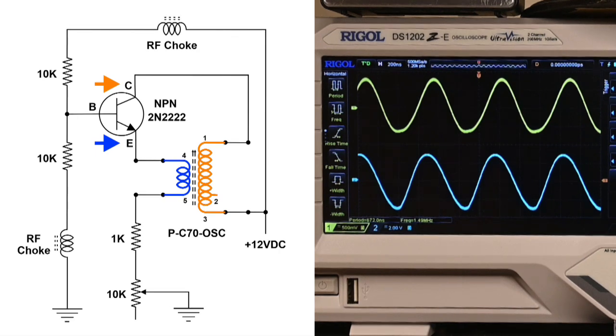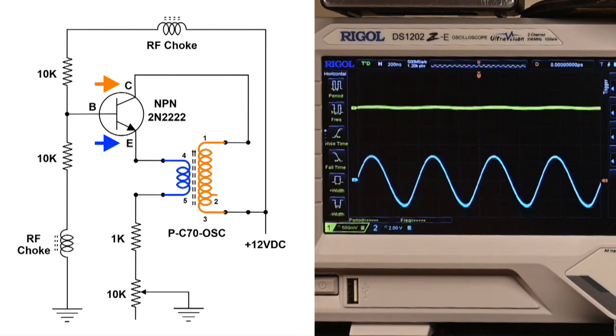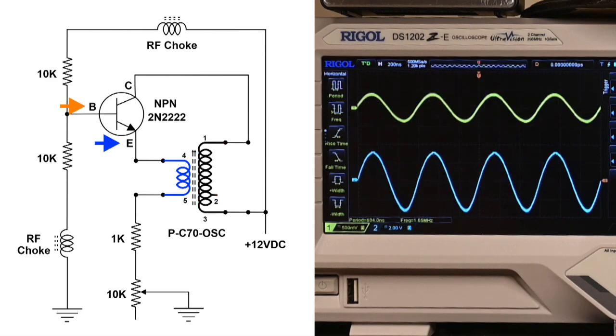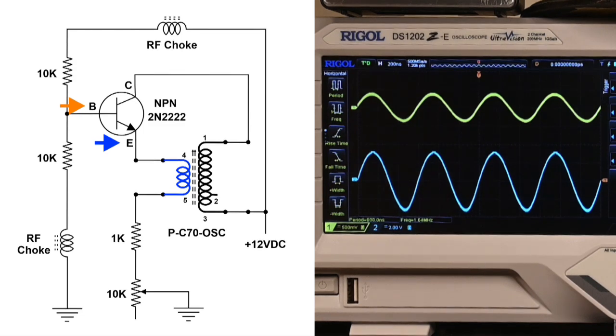Well, let's take a look at the, I'll take the lead off of the collector and we'll put it on the base here. Now, now we're looking at the top is the base and the bottom is the emitter.